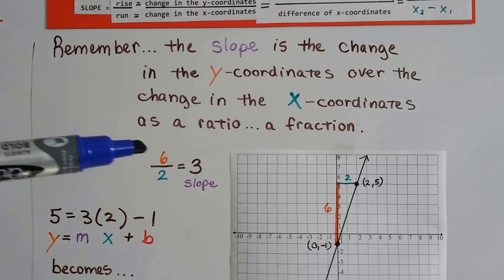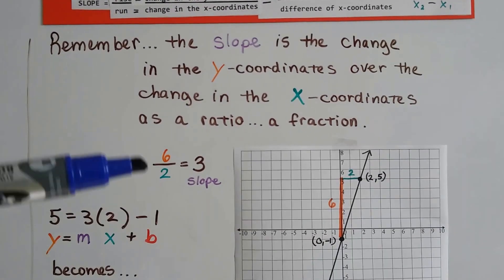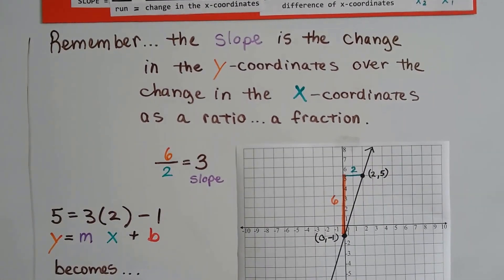So if we've got 6 over 2, that's our rise over our run, our slope is 3.